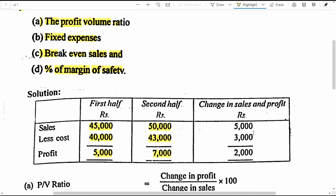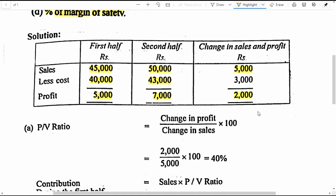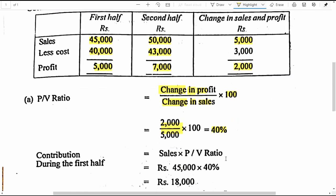Now what is the change in sales and profit? Sales was 45,000 in the first half year and 50,000 in the second, giving a difference of 5,000 rupees. With regard to profit, it was 5,000 rupees in the first half year and 7,000 rupees in the second, giving a difference of 2,000 rupees. Applying these in the formula: change in profit divided by change in sales into 100 — 2,000 divided by 5,000 into 100 gives us 40% as the profit volume ratio.